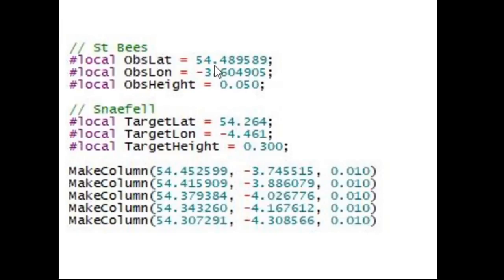Here are the inputs into my rendering program. I've set up my observer at the beach on St. B's and set an observer height of 50 metres, which will change shortly. Snaefell is here and we're looking, the centre of our camera is pointed roughly halfway up Snaefell. Here are the latitude and longitude coordinates of each column and if you wanted to check that these were 10, 20, 30, 40 and 50 kilometres away you may do so.